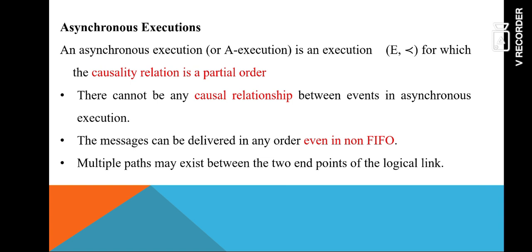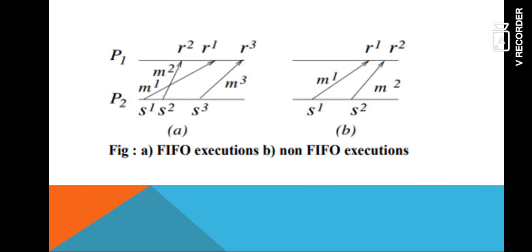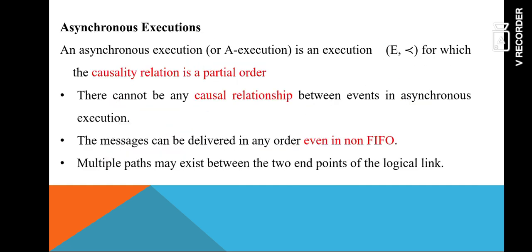The first type is non-FIFO, which is asynchronous execution, denoted as A execution. Here the causality relation is partial order, so there cannot be any causal relationship between the events. Messages can be delivered in any order, even in a non-FIFO order. We can have multiple paths between the sender and the receiver over the logical link. This is asynchronous, that is non-FIFO execution.